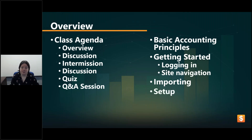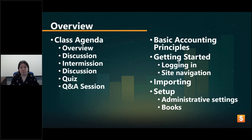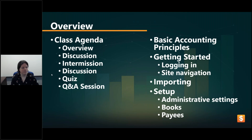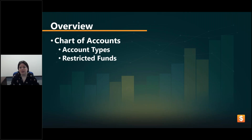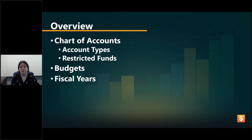Then we'll do some basic setup, including the administrative settings, which will include things like users and roles, people who can log in, setting up different books, different entities if you have different organizations that you keep books on, and payees — which are your vendors — and how you can create them either during an initial transaction or from the payee window. Then we'll get into setting up our chart of accounts, going over the different account types including restricted funds, enter in our budgets, show how to unlock and lock fiscal years, and then our quiz and Q&A session.